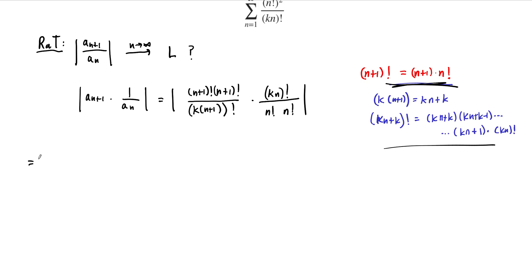And notice that everything here is positive, so we can actually ignore the absolute value here, and this whole thing can be written as n plus 1 times n factorial times n plus 1 times n factorial times k times n quantity factorial, all divided by this product here, k times n plus k times k times n plus k minus 1, all the way down to k times n plus 1 times kn factorial, and then times n factorial times n factorial. And a lot of this is going to cancel.